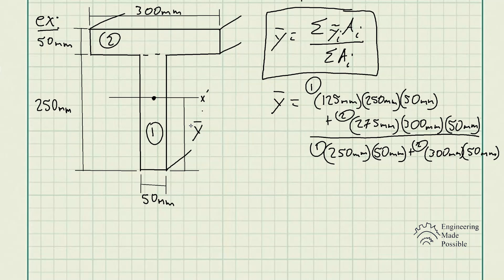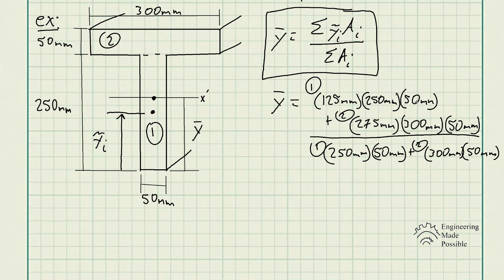Now the Y-bar for rectangle one — keep in mind we're measuring from the bottom portion of the T-beam. Since it's a rectangle, the centroid would be half of 250, so 125 millimeters is the centroid of this rectangle with respect to the bottom portion of the T-beam. We multiply that by the area.